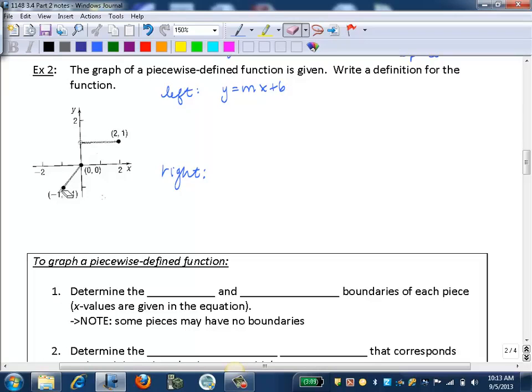If we look at this line, we can find our slope by counting our rise over run, going from the point negative one, negative one, to the point zero, zero. If I'm moving left to right, I would have to rise one and run one. So that means this line has a slope of one.